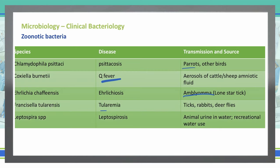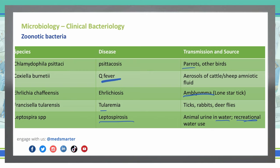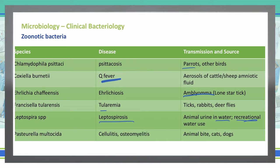Leptospira species causes leptospirosis. This comes through animal urine that ends up in contaminated water. Coming into contact with that contaminated water is often due to recreational water use — for example, if you're swimming in a stream that was upstream contaminated by animal urine from an infected animal, that's how you can contract leptospirosis. Pasteurella multocida causes cellulitis and osteomyelitis, and it comes from animal bites — specifically cats and dogs, but other animals as well.